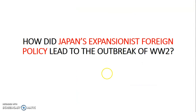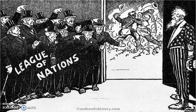How did Japan's expansionist foreign policy lead to the outbreak of World War II? By expanding their territory, it made Japan stronger and more able to fight, which means they could now attack places such as the USA because they had the capacity to do so.